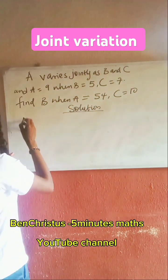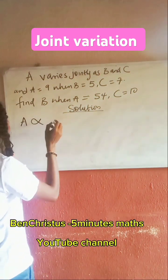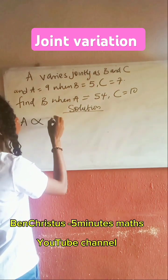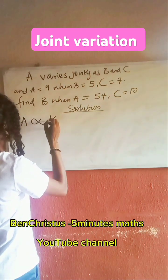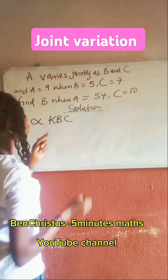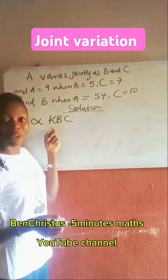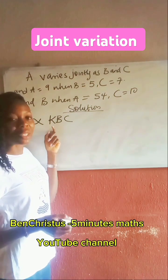So we are told that A varies jointly as B and C. This constant is a must in variation. So it's necessary.